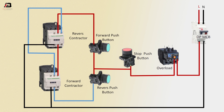Output connection from forward contactor to reverse push button — coil to NO connection. Output connection from reverse contactor to connect forward contactor coil connection. NC connection in forward contactor. Now this circuit is ready for use.